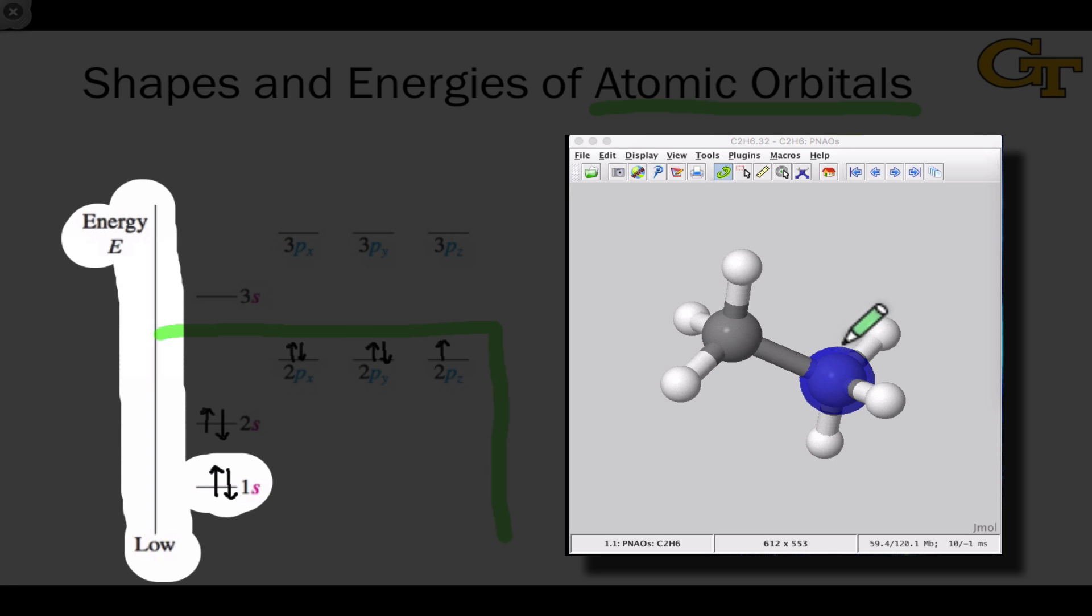I've overlaid the 1s orbital on carbon on top of this carbon here. We should notice that the orbital is quite compact. It's very close to the sphere that represents the carbon atom, and it's spherical.